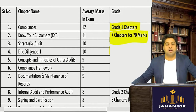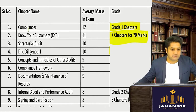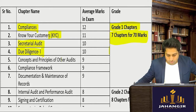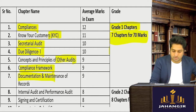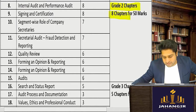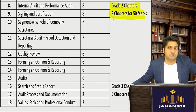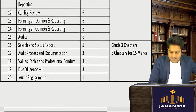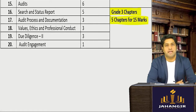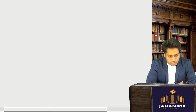For grade one chapters in secretarial audit, there are 7 chapters coming for around 70 marks. These include compliance KYC, secretarial audit, due diligence, other audits, compliance framework, and documentation. Grade two has 8 chapters for around 50 marks in your exams. Grade three has 5 chapters coming for around 15 marks in your examination.